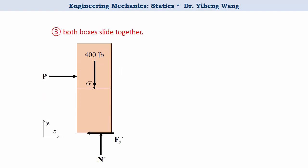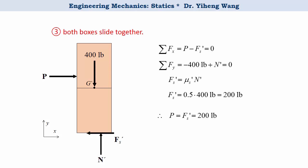The third situation — both boxes sliding together — is similar to the first situation except that now both boxes are treated as one system. We draw the free body diagram of the entire system, noting that the total weight is 400 pounds and both the normal force N' and static frictional force Fs' act at the contact surface between the boxes and the floor. Writing the two force equilibrium equations, we solve for the applied force P to be 200 pounds.